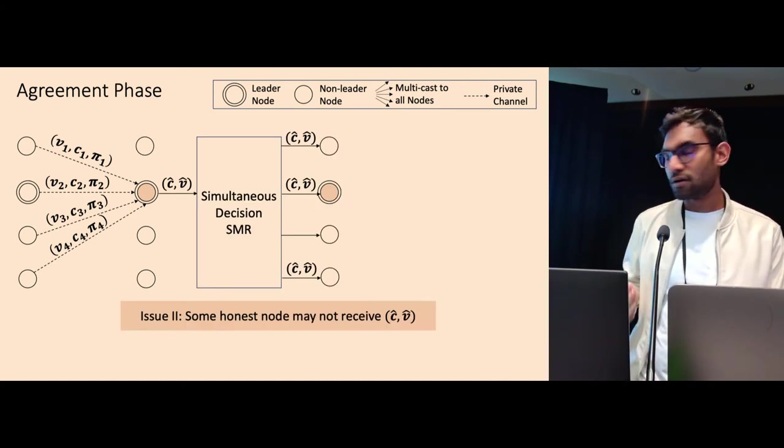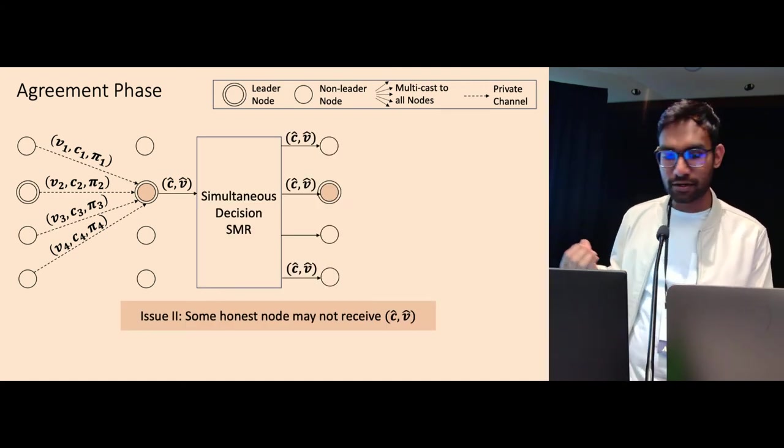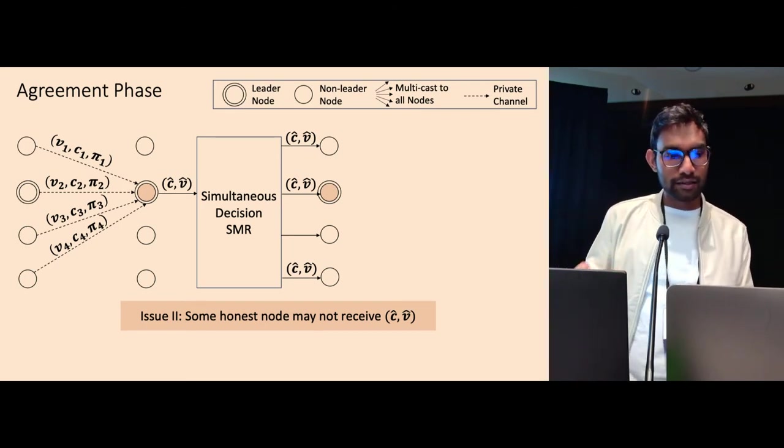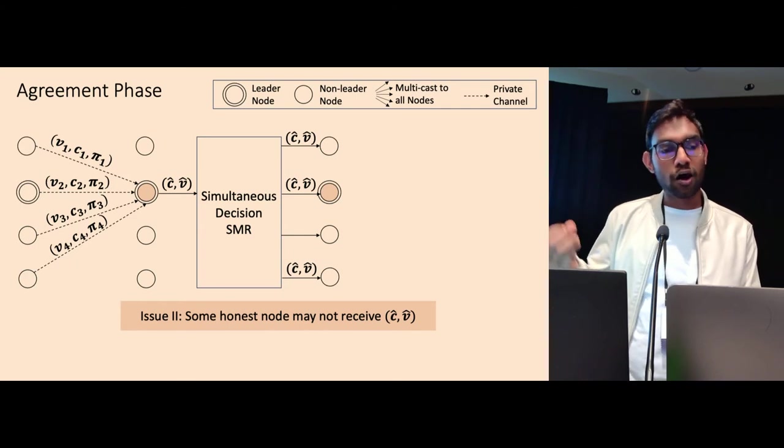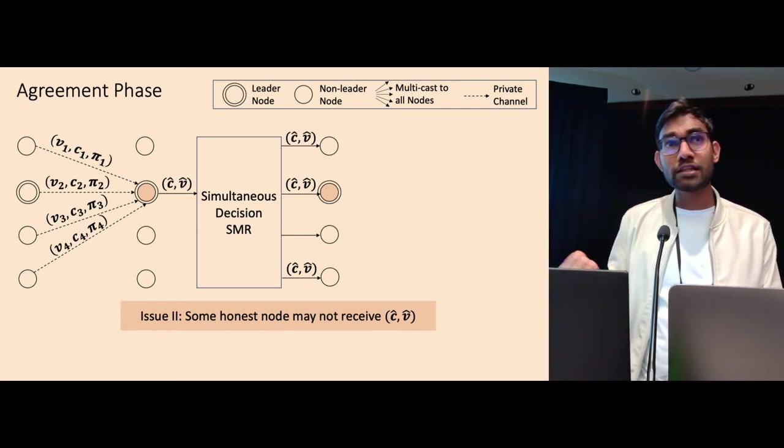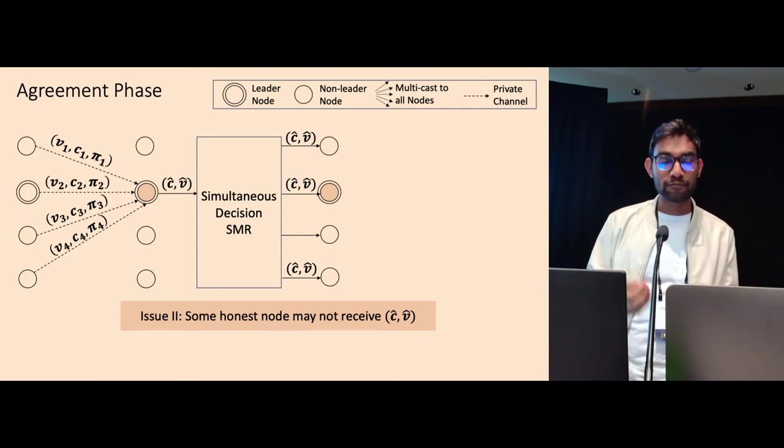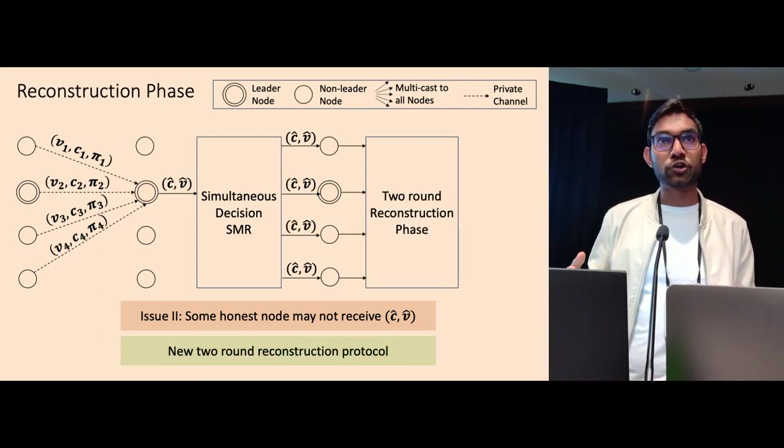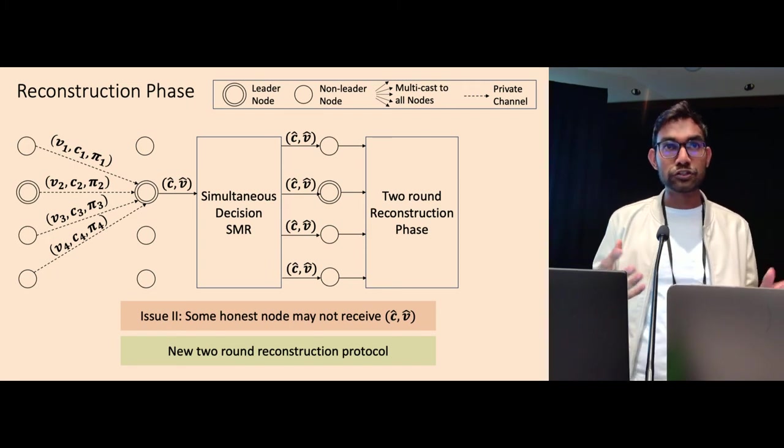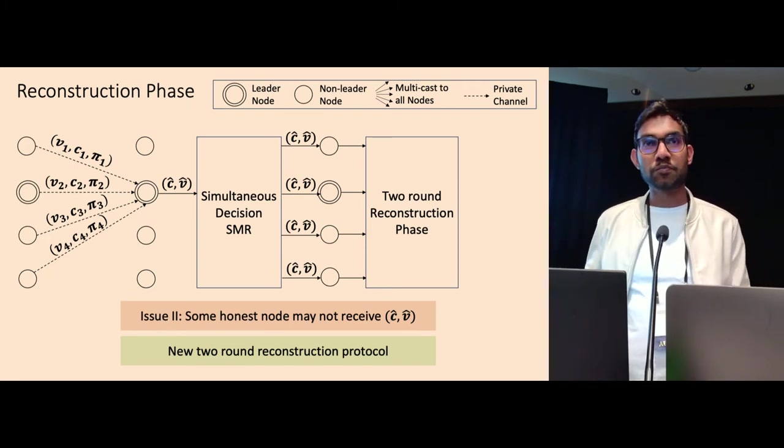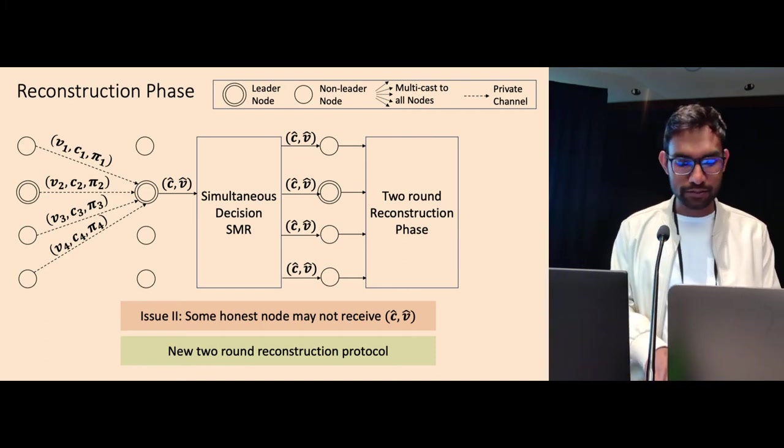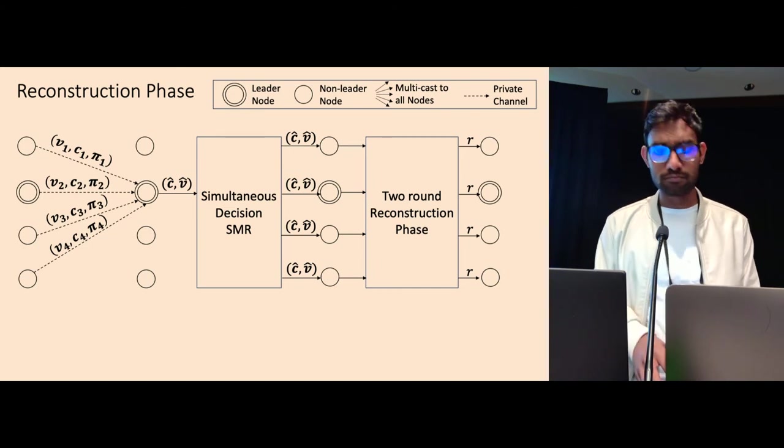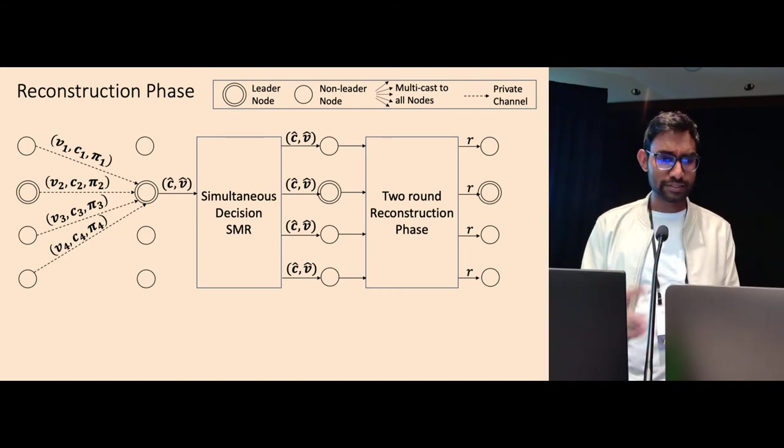There is another issue. It is a subtlety in most of the SMR protocols where it is possible that if the leader is bad, then it is possible that some honest node do not output the value. They will know that the decision has been reached, but they won't have the value locally. And we address this by using a two-round reconstruction protocol which ensures that even if this kind of situation arise, the random beacon protocol still ensures unpredictability and the remaining properties. So at the end of the reconstruction phase, the nodes will output a common beacon output.